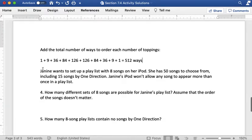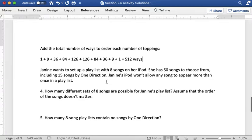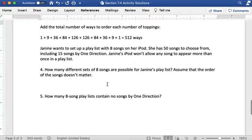We're going to switch to a different context here. Now we have Janine making a playlist. The playlist is going to be 8 songs. She has 50 songs to choose from, including 15 songs by One Direction. And we are not allowing any song to appear more than once in a playlist. So how many different sets of 8 songs are possible? Assume that the order of the songs doesn't matter. So since order doesn't matter, that tells us that it's going to be a combinations problem.